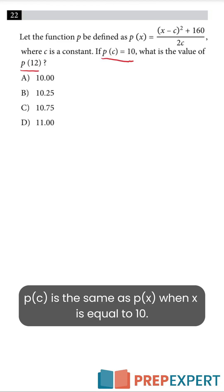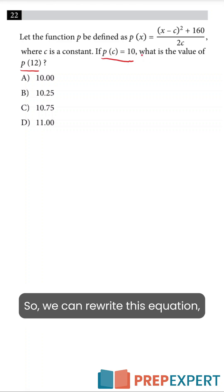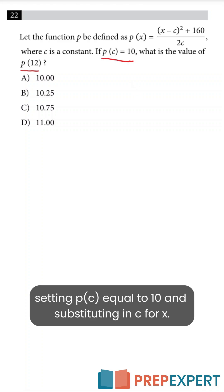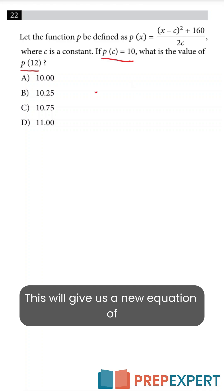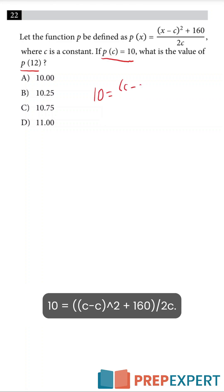p of c is the same as p of x when x is equal to 10. So we can rewrite this equation, setting p of c equal to 10 and substituting in c for x. This will give us a new equation of 10 equals c minus c squared plus 160 over 2c.